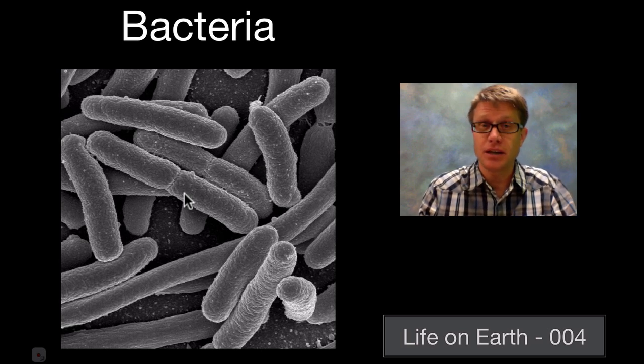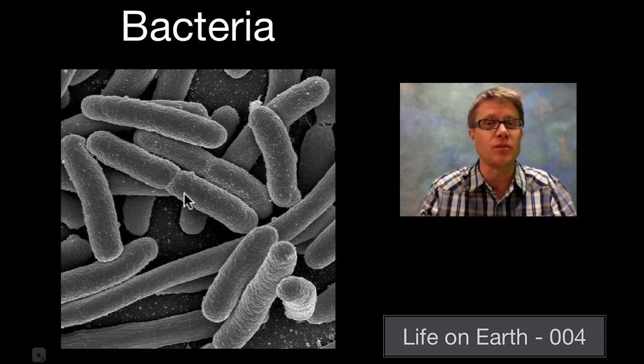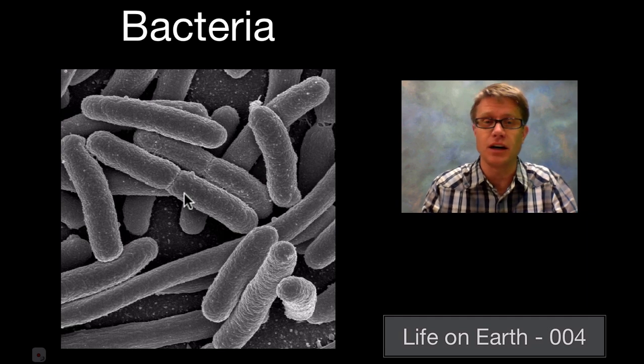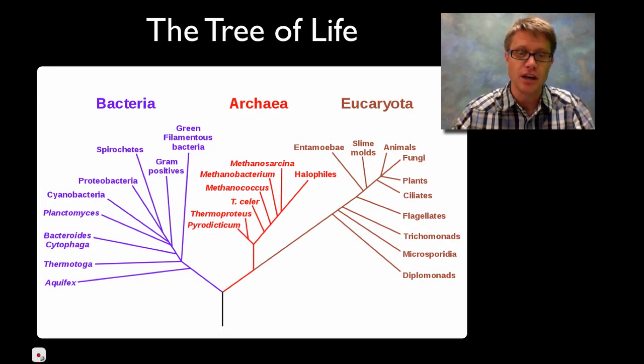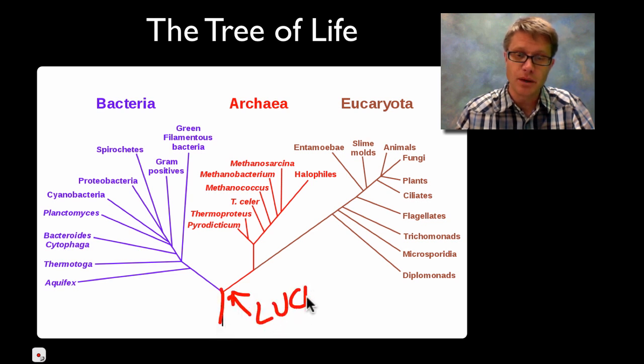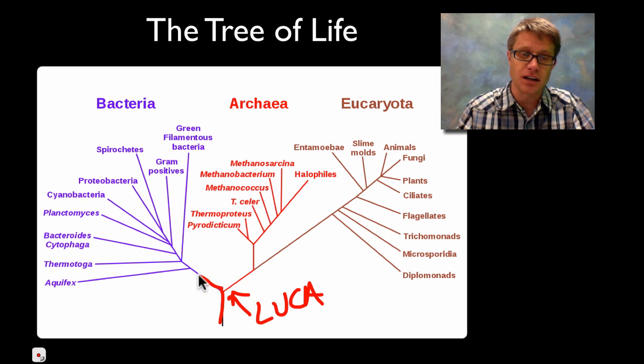Bacteria is an ancient domain. They're quite a bit different than us. We're in the domain eukarya. But they're just as fascinating. They've been around billions of years. Some of them are evil to us and some of them are beneficial to us. And so if we look at their phylogeny, basically if this is that last universal common ancestor or LUCA, basically they diverged from us a long time ago. And we have all these different types of bacteria.